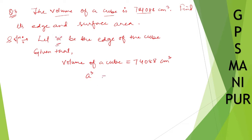We have a³ = 74088, so a will be equal to cube root of 74088. So we need to find the cube root. There are many shortcut tricks, but let me do the longer method using prime factorization.